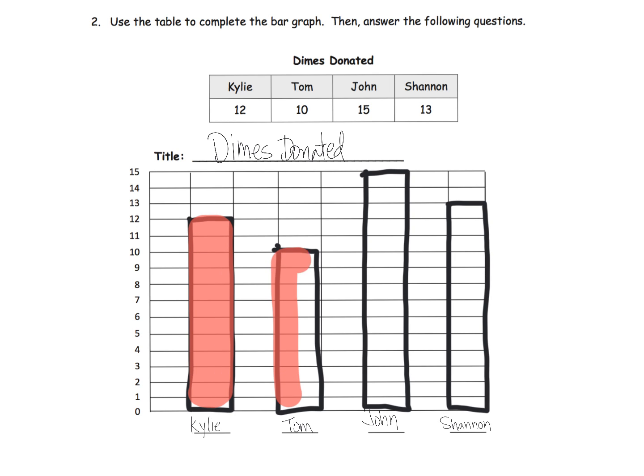And then of course it's nice to color it in. I'll do red this time. And so there we go, there's our bar graph. Now some of the things that you could talk about is, well, if we know that John was 15 and Shannon is 13, that means she's going to be two less.